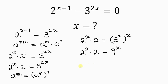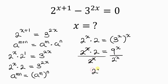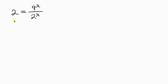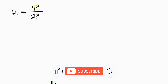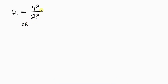Our next step is to divide both sides by 2 to the x. The 2 to the x cancels from the left, leaving 2 equal to 9 to the x over 2 to the x on the right. Flipping their positions, we rewrite this as 9 to the x over 2 to the x equals 2.